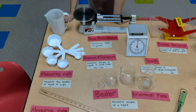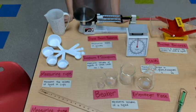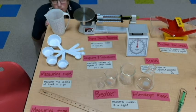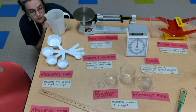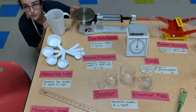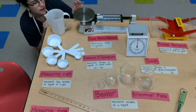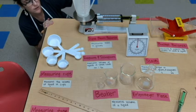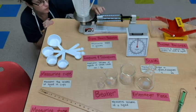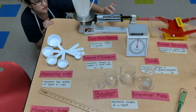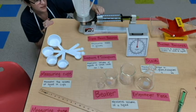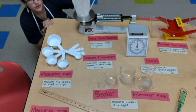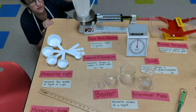So this is our triple beam balance right here, and we would place an item, such as so, on top of the scale, and we would move these knobs over to help us get an accurate measurement for trying to determine the mass of this object.